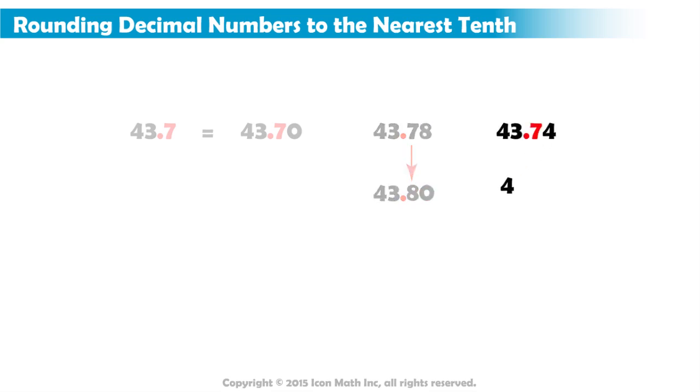In case the digit on the right of the tenths place is less than 5, as in the number 43 and 74 hundredths, we just leave the digit in the tenths place as it is, and change the digit to its right to zeros.